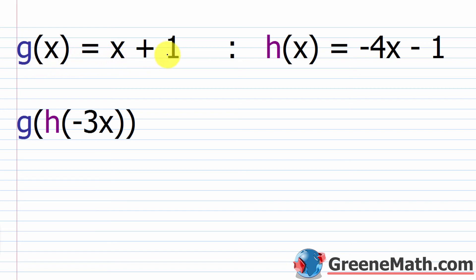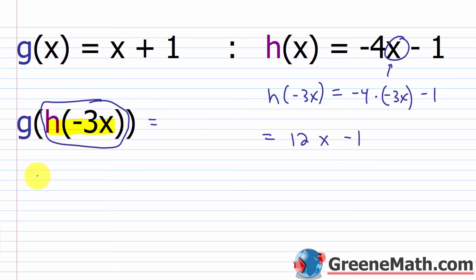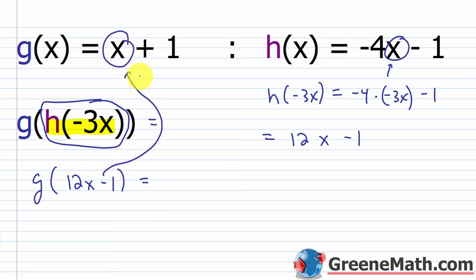Next, we have g of x equals x plus 1, h of x equals negative 4x minus 1, and we want g of h of negative 3x. Start by finding h of negative 3x: plug negative 3x in for x. You'd have negative 4 times negative 3x, then minus 1. Negative 4 times negative 3 is 12. So you'd have 12x minus 1. This becomes g of 12x minus 1: plug in 12x minus 1 for x in g of x. So 12x minus 1 plus 1. Negative 1 plus 1 is 0, so this is just 12x. So g of h of negative 3x equals 12x.